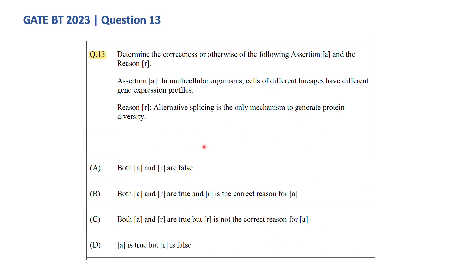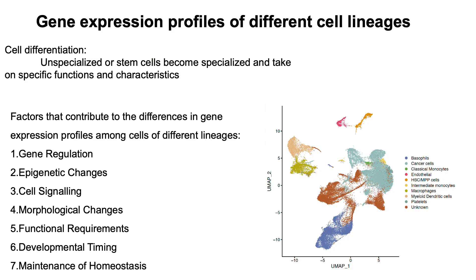Option A: both A and R are false. Option B: both A and R are true and R is the correct reason for A. Option C: both A and R are true but R is not the correct reason for A. Option D: A is true but R is false. To understand this, let's learn about the factors contributing to gene expression profile differences and factors contributing to protein diversity.